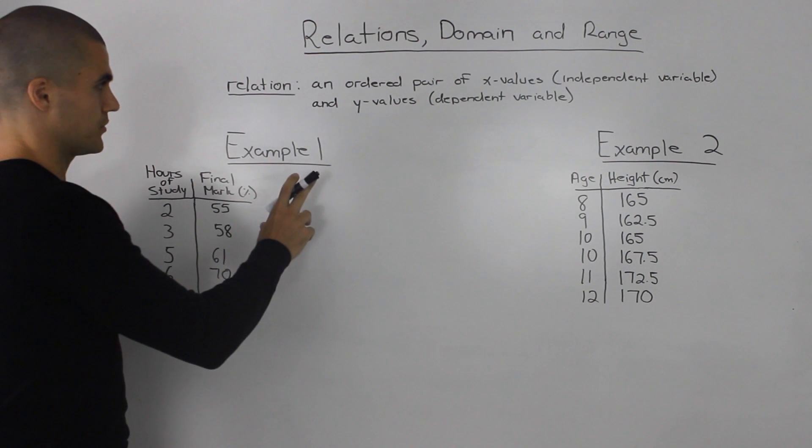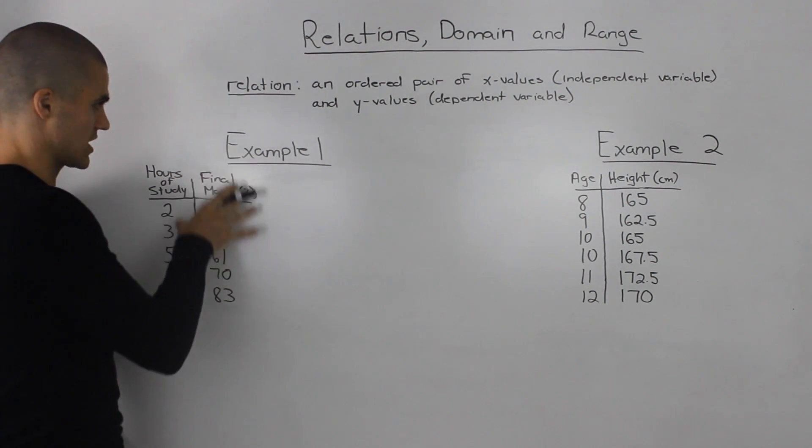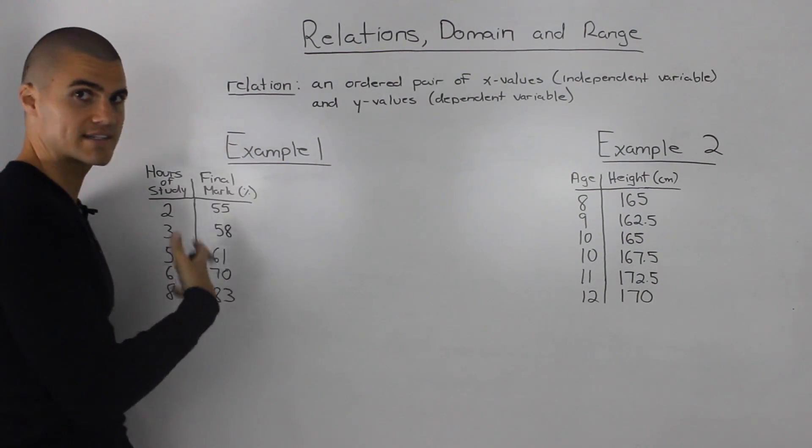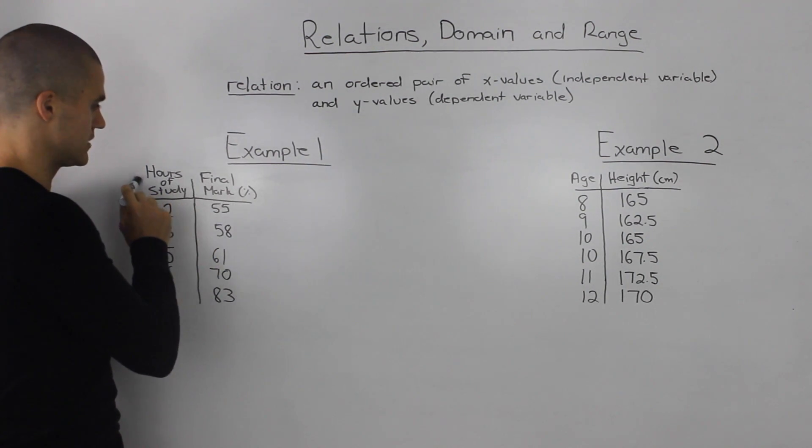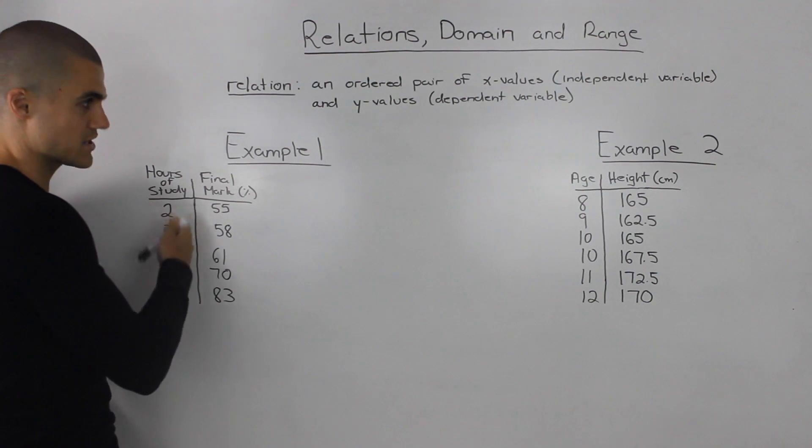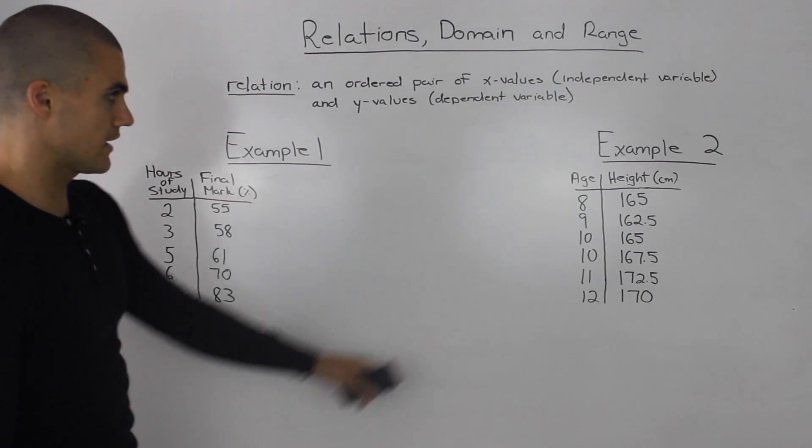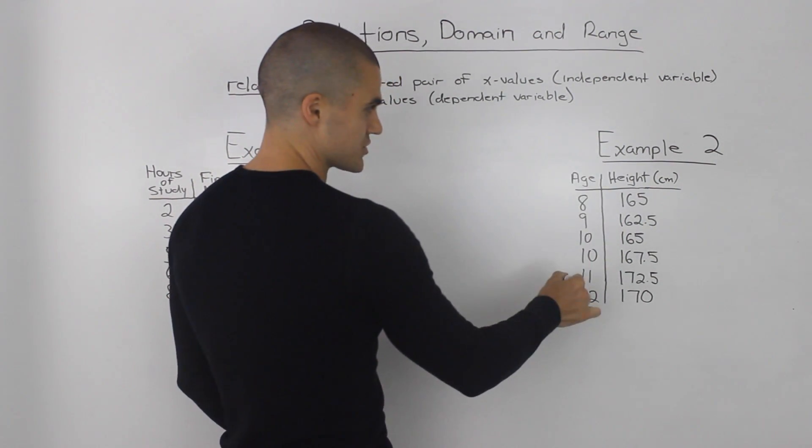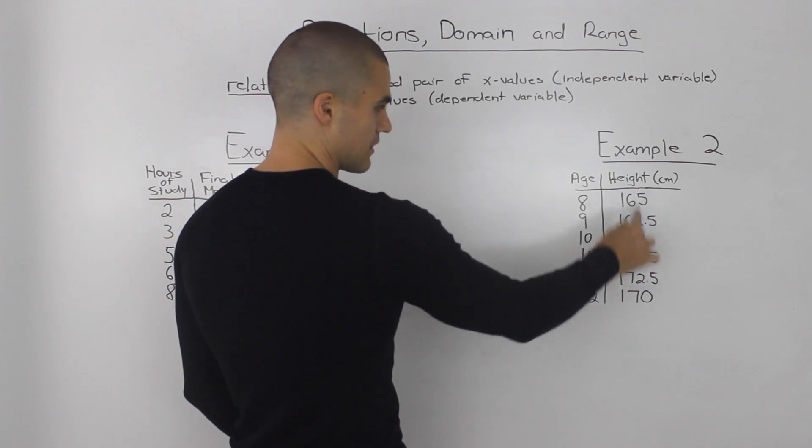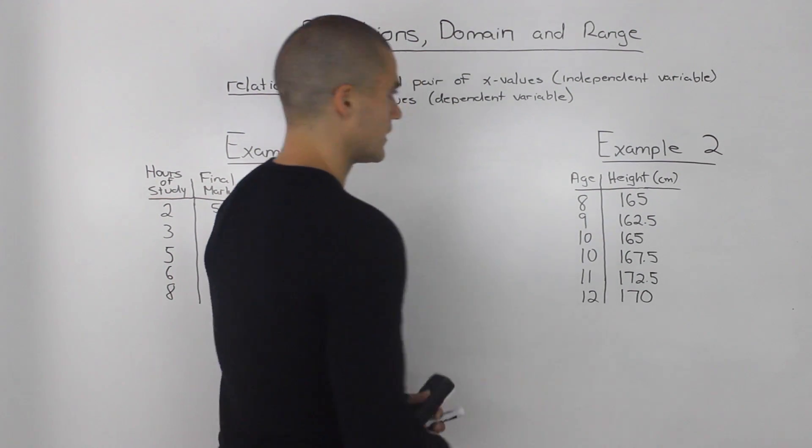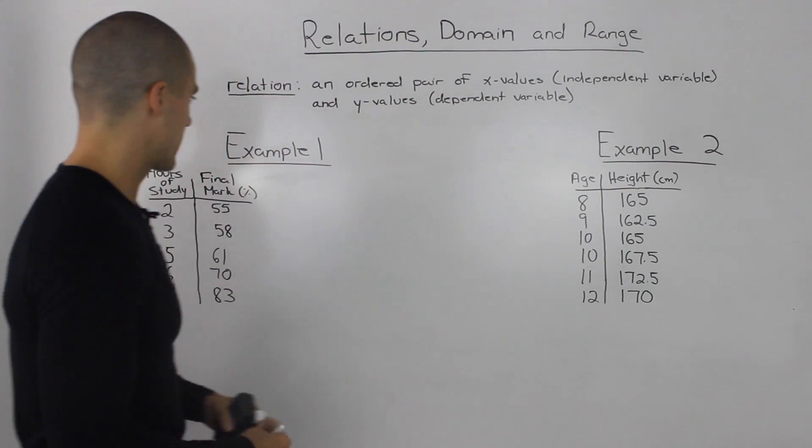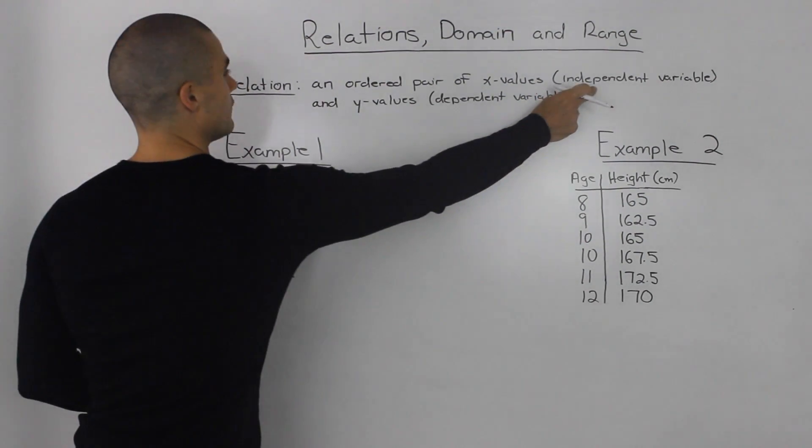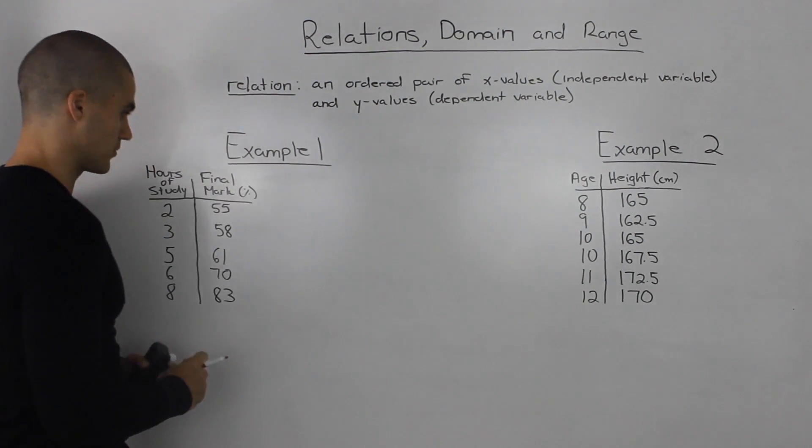Let's show two examples of certain relations. The first example is how the final mark on a test is affected by the number of hours studied before. In the second relation we're seeing how the age of a person affects their height. The first thing you always want to check with relations is which is the independent variable and which is the dependent variable.